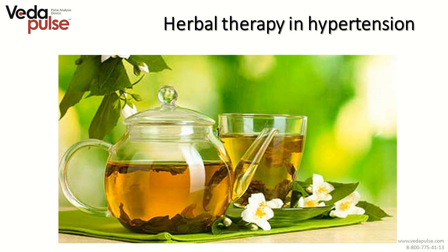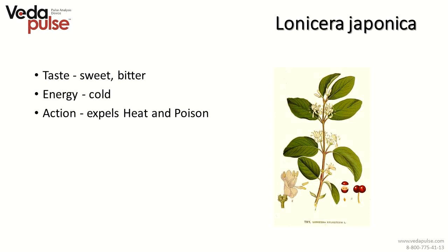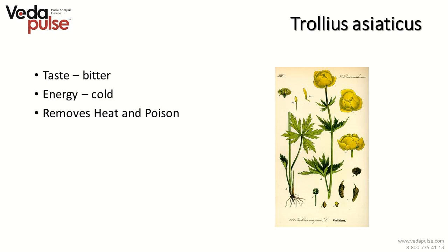Herbal therapy can be very beneficial in the early stage of hypertension. Sometimes it is possible to bring blood pressure to norm only with herbs. If blood pressure doesn't go down after effective modern drugs, herbal therapy can make the body more responsive to medicines. Chinese herbal therapy: Lonicera japonica has sweet and bitter taste, cold energy, and expels heat and poison. Trollius asiaticus has bitter taste, cold energy, and removes heat and poison. Ilex aquifolium has bitter and astringent taste, cold energy — it removes heat and poison, cools the blood, and stops bleeding.